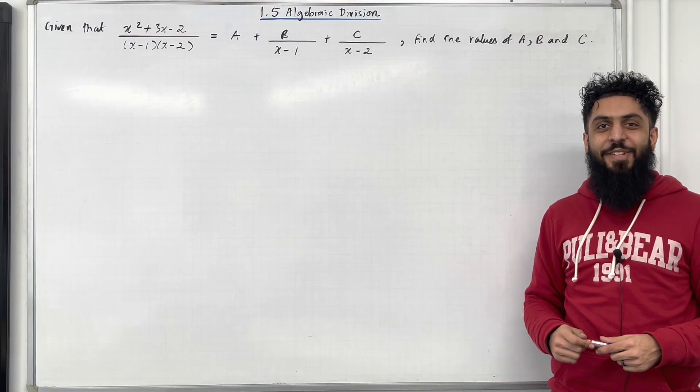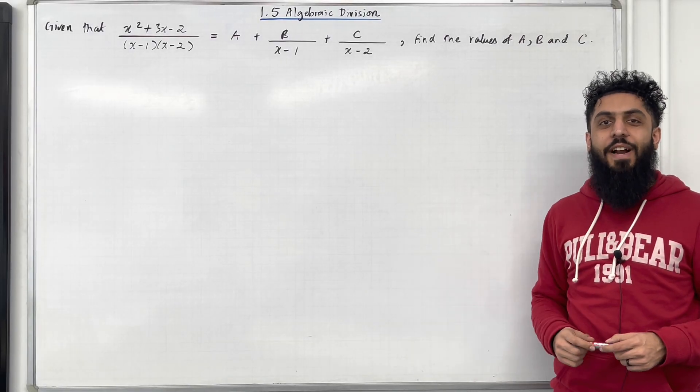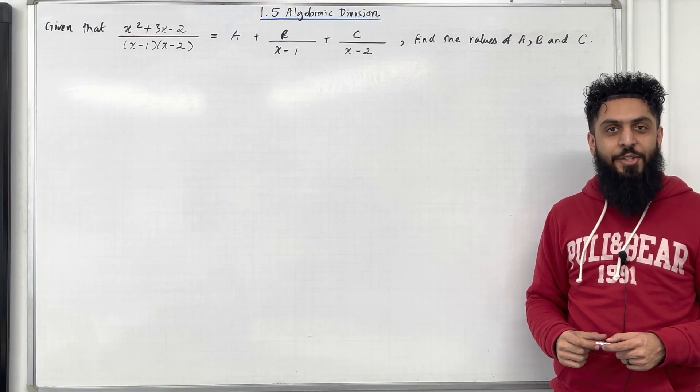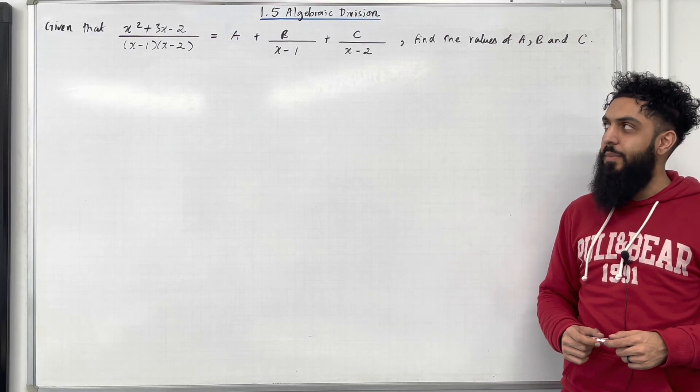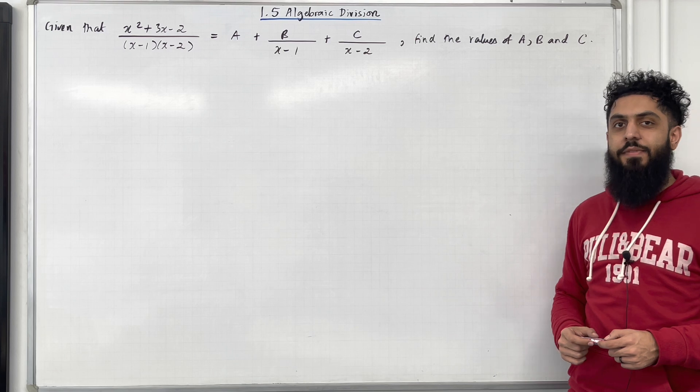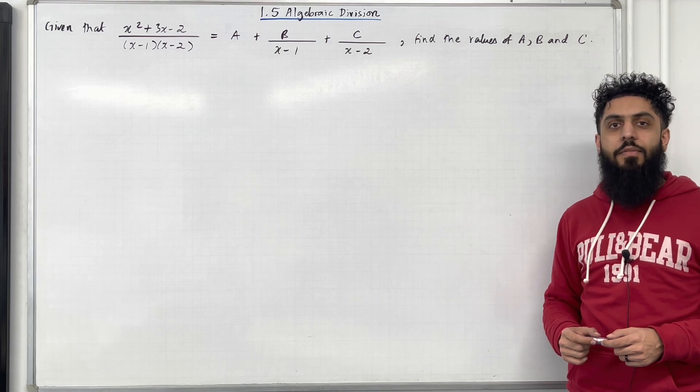Welcome back. In this teaching video I'll be looking at 1.5 algebraic division. 1.5 represents chapter 1, section 5 of the Pearson A-level maths year 2 textbook.